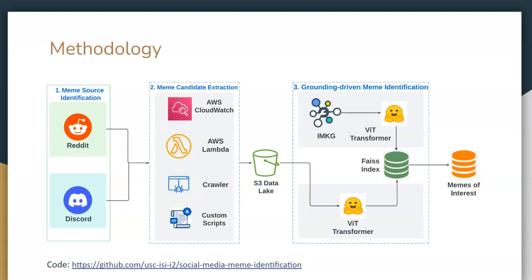In the final step, we ground the data — meaning we use an Internet Meme Knowledge Graph to ground the data extracted from the previous step — where we use a visual transformer to embed the memes present in IMKG and store the vector representations into a FAISS index vector store.